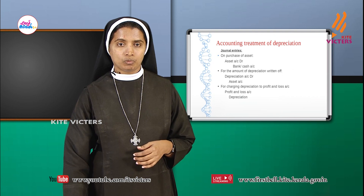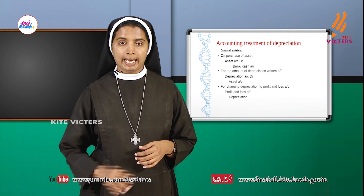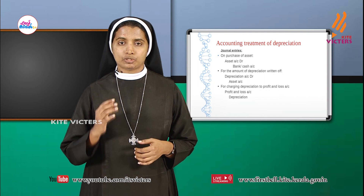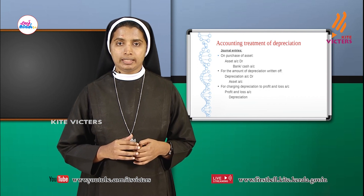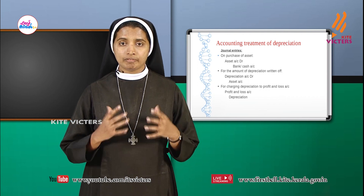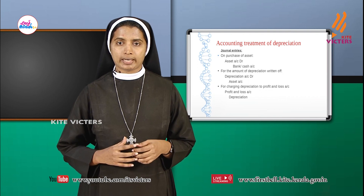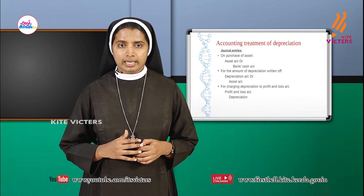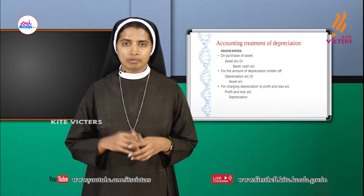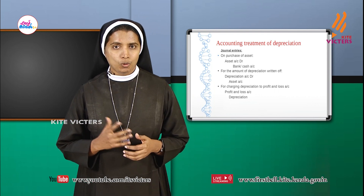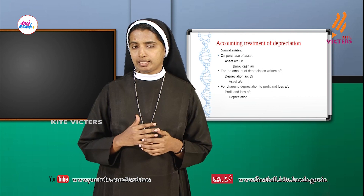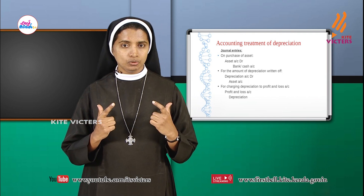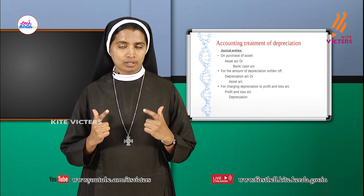Now we are moving on to the accounting treatment of depreciation — the journal entries to be passed for depreciation. On purchase of asset, what will be the journal entry? On purchase of asset, asset account debit to bank or cash account.